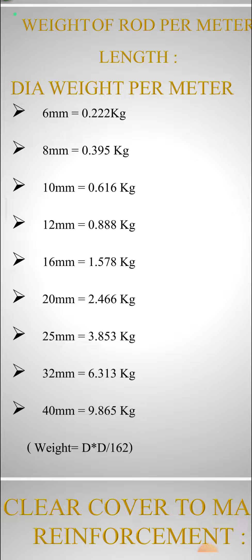Diameter of weight per bar: 6 mm dia rod per meter length is 0.22 kg. In 8 mm, 0.39 or 0.40 kg. In 10 mm, 0.616 kg. In 12 mm, 0.88 kg.